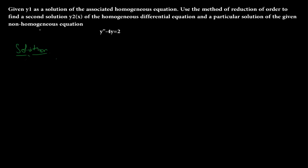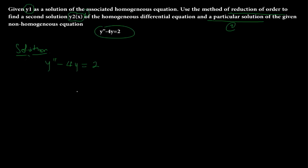This is a good example. It says: given y1 as a solution of the associated homogeneous equation, use the method of reduction of order to find a second solution y2 of the homogeneous differential equation and a particular solution of the non-homogeneous differential equation. I'm going to start by writing the differential equation we were given: y'' minus 4y equals 2.